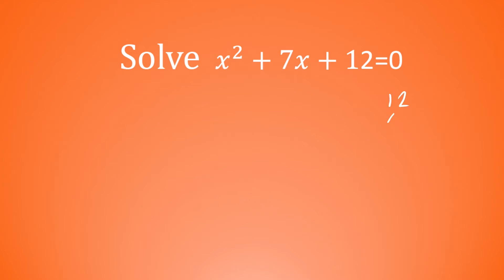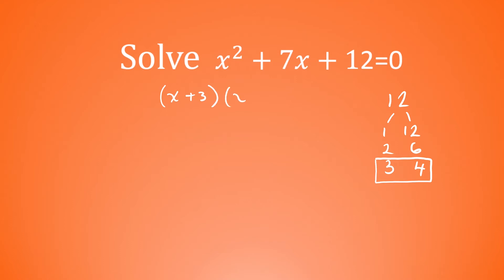Sometimes you can just spot that and it's pretty easy. If not, you can just list the factors of 12. So we've got 1 times 12 is 12, 2 times 6 is 12, 3 times 4 is 12. So 3 and 4 multiply to 12 and they also add to 7. So that's our pair of numbers. To factorize this, we get x add 3, multiplied by x add 4, and it is equal to 0.